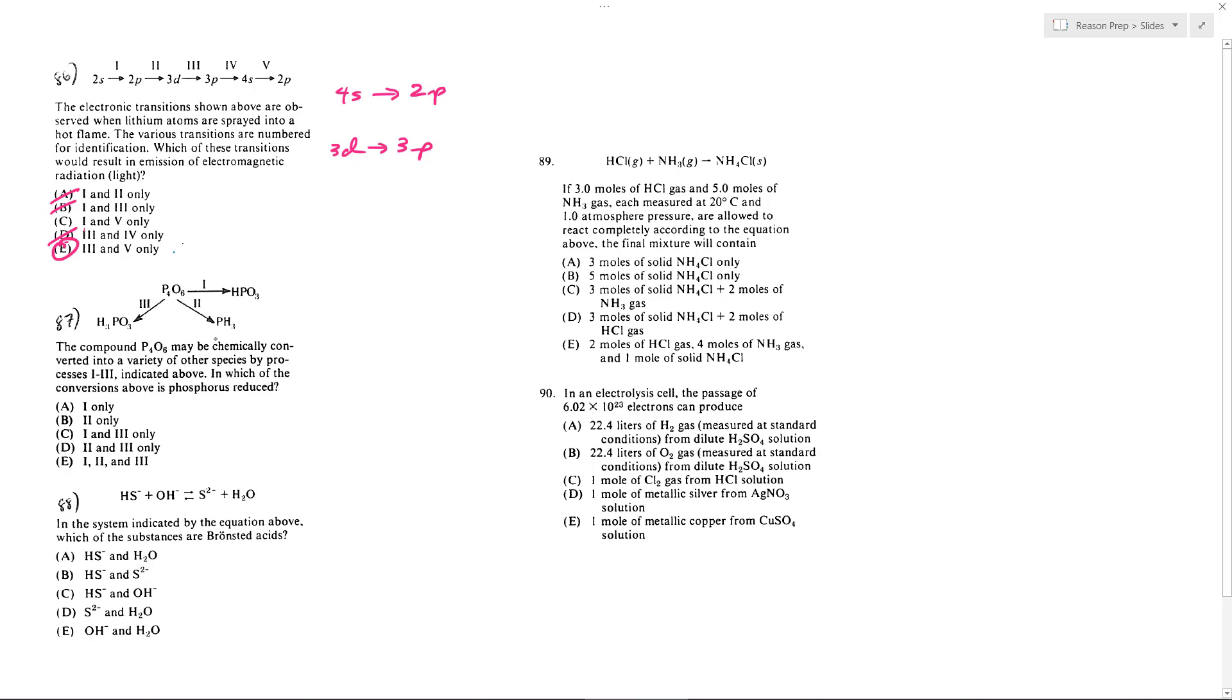87. We want to know which of these reactions will lead to the reduction of phosphorus. So first we need to find out the oxidation number of phosphorus. P4O6, each of these oxygens is -2, so that must mean the total oxygen charge is -12, which means each of these phosphorus has got to be +3 because that's what's going to make everything neutral. Over here, each of these oxygens is -2, so that's -6 total.